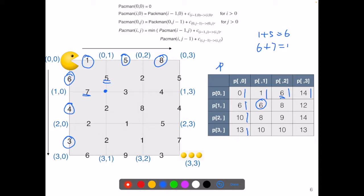That's 1 plus 5, 6 from above, or 6 plus 7, that's 13, from left. So we know 6 has the smaller cost. So that's the value for p(1,1). That's 6. Please pause the video and try to figure out the rest of the table using the same manner.